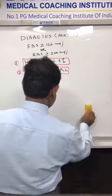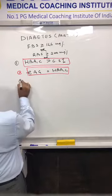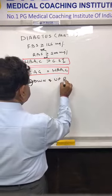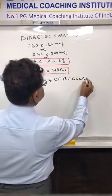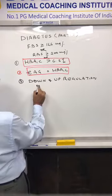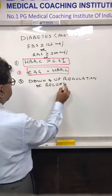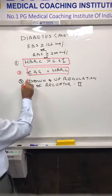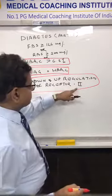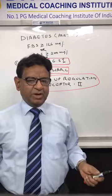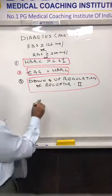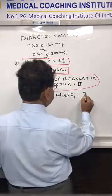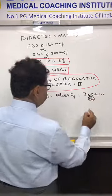The third new thing is down and up regulation of receptors. This is seen in type 2 diabetes — that is the third carry-home message.